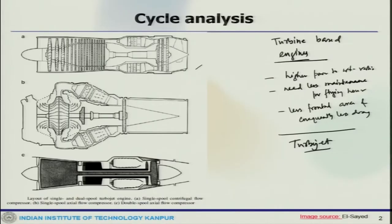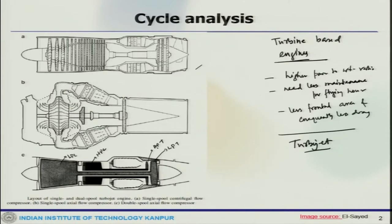In the single spool configuration, the compressor and turbine are connected with a single shaft, and in between there is a combustor, then the nozzle. In the twin spool configuration, you have LPC (low pressure compressor), HPC (high pressure compressor), HPT (high pressure turbine), and LPT (low pressure turbine). HPT and HPC are connected on one shaft; LPT and LPC are connected on another shaft — that is what makes it a twin spool configuration.